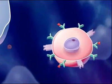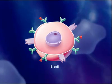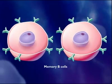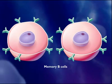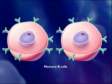Some of the B-cells do not turn into antibody factories, but instead become memory B-cells that may survive for several decades. Because of these memory B-cells, the secondary immune response to a future infection by the same pathogen is swifter and stronger. This powerful secondary immune response is what gives immunity to some diseases after you have had them once or after you have been vaccinated.